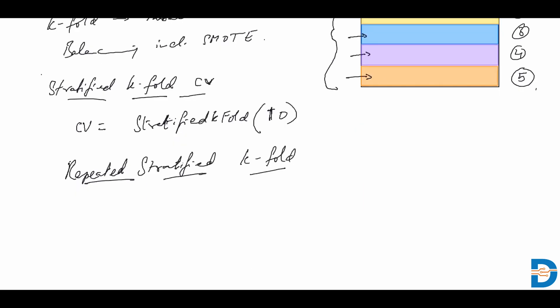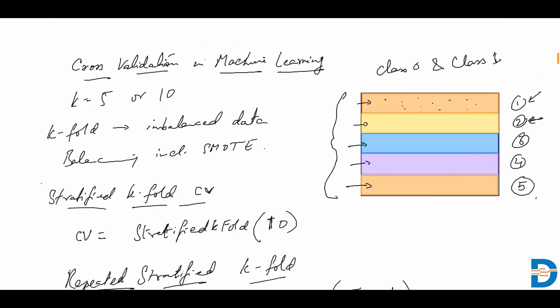However, if we have the repeated stratified k-fold, we're certainly talking about having another parameter. Repeated stratified k-fold would include the number of splits, let's say we have five, and it would also include the number of repetitions, let's say we provide 10. Then we're talking about each iteration being repeated about 10 times.